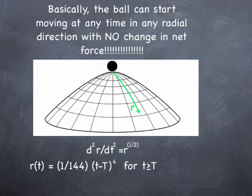So, yeah. Basically, what this says is, at any time t, the ball can just, like, start moving in any radial direction it wants to with no change in net force whatsoever. Well, if you've made it this far, you can see this is an amazingly simple system which would exhibit the non-determinism. I mean, it's just, it blows your mind that nobody had seen this before.